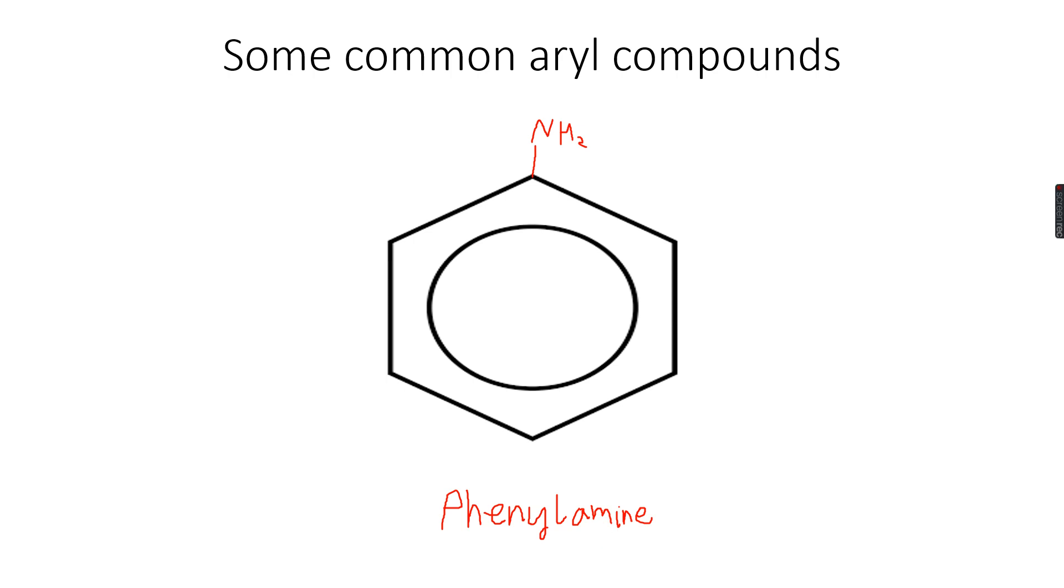This becomes phenylamine. And now let's do the last one, which is two more—let's do the second last one. So if we have a CH3 group over here, which is the methyl group, we call it methylbenzene.